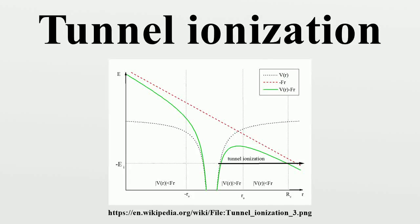Tunnel ionization is a process in which electrons in an atom pass through the potential barrier and escape from the atom.